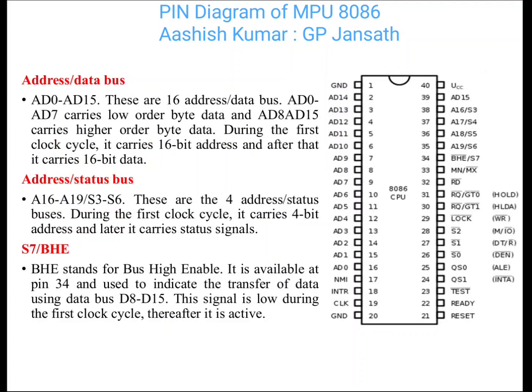Address and data bus: AD0 to AD15 are 16-bit multiplexed address-data lines. AD0 to AD7 carry low order data byte and AD8 to AD15 carry high order data byte. During the first clock cycle it carries 16-bit address, and after that it carries 16-bit data.